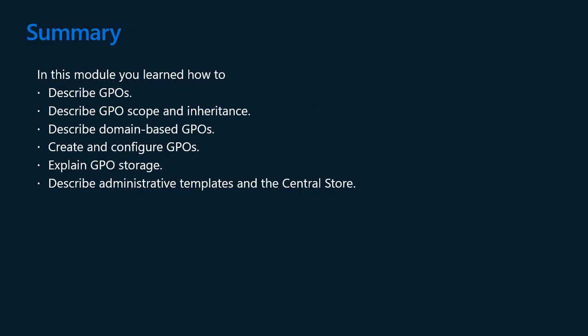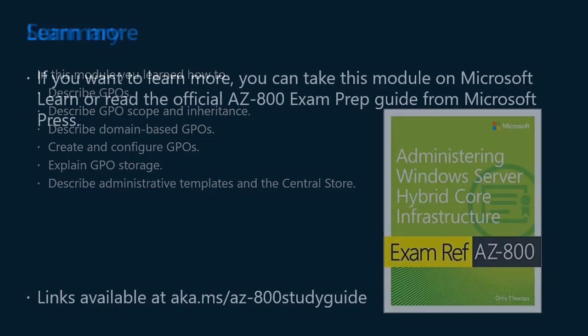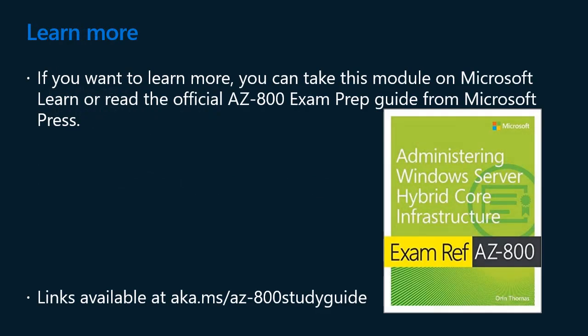In this module, you learned how to describe GPOs, describe GPO scope and inheritance, describe domain-based GPOs, create and configure GPOs, explain GPO storage, and describe administrative templates and the central store. If you want to learn more, you can take this module on Microsoft Learn or read the official AZ-800 exam prep guide from Microsoft Press. Links are available at aka.ms/AZ-800-study-guide. We publish new content regularly on this channel on topics related to Windows Server, hybrid cloud, and Azure infrastructure, and the certifications related to these topics.